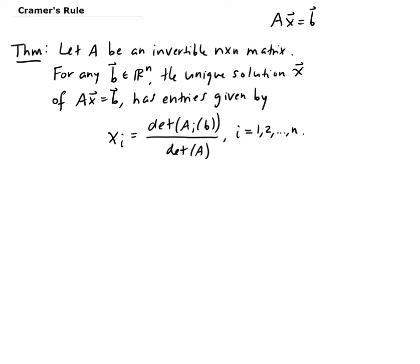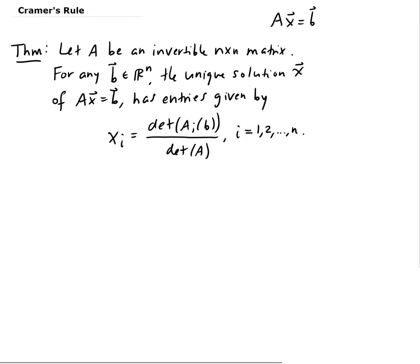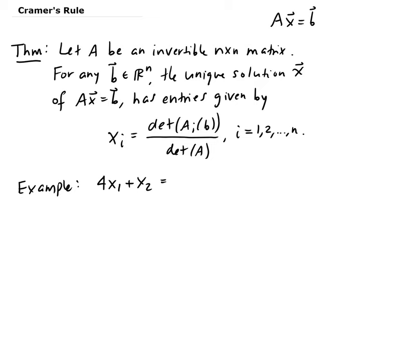So I'm going to do an example to explain how this works. Let's define our system as follows: 4X₁ plus X₂ equals 6, and 5X₁ plus 2X₂ equals 7.